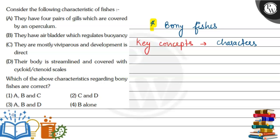Let's look at each statement. They have four pairs of gills covered by an operculum. Look, these bony fishes are placed in a special class which is known as Osteichthyes. This is the name of the class of bony fishes. These fishes are basically jawed fishes.